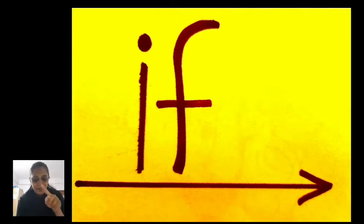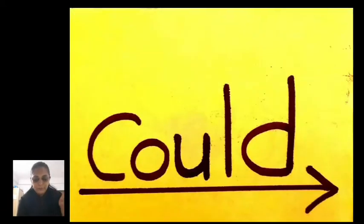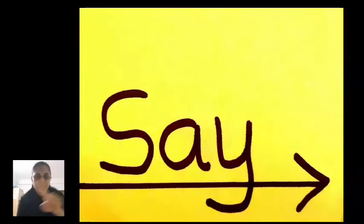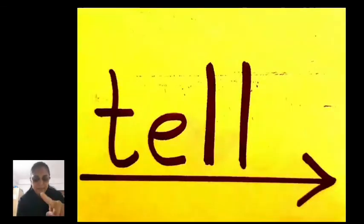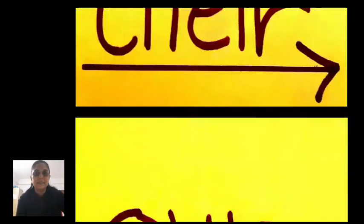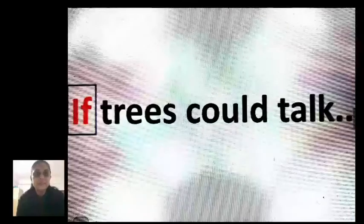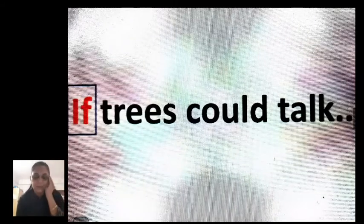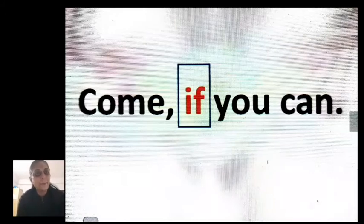Now here we will do an activity with whole words. There are some sentences also and we will try to understand them. The words are: could, tell, there, are, if. 'If' means 'shayad' — for example, 'Come if you can' means 'agar aap aa sakte ho.' 'If the trees could talk' — 'agar' means if, and 'could' means 'shayad' or possibility.